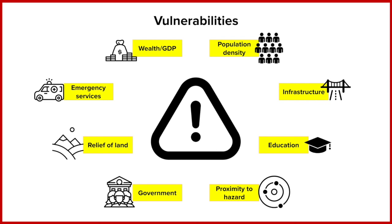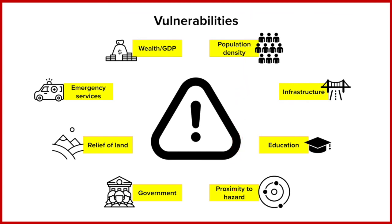These vulnerabilities are not shown in isolation. One hazard won't purely rely on population being high or low — it will be linked to all of these factors, and they all influence the vulnerability of an area. They're arranged in a circle because we would typically make a mind map or concept map: how does wealth link to education? How does government link to infrastructure? How does population density and proximity to hazard link? All of these things are interrelated and influence each other.